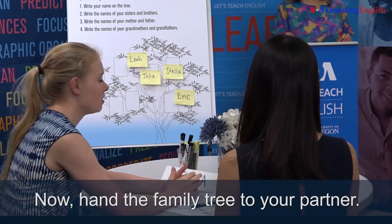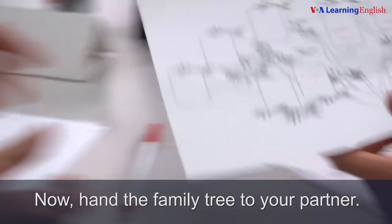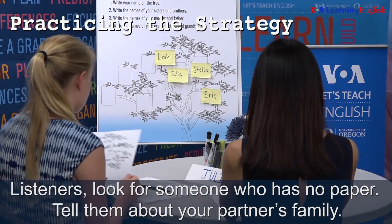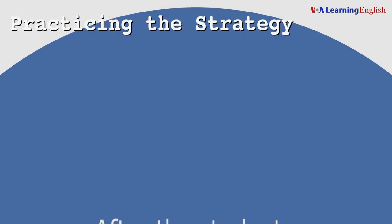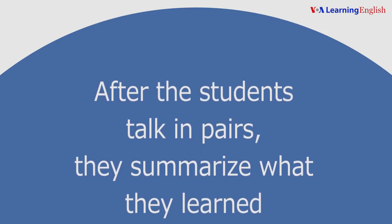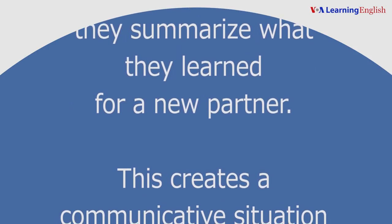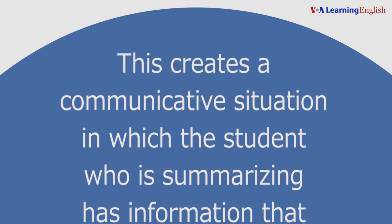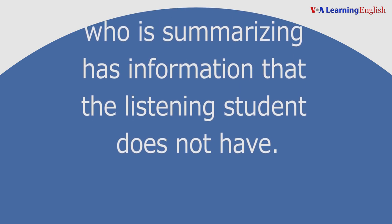Now, hand the family tree to your partner. Listeners, look for someone who has no paper. Tell them about your partner's family. Practicing the strategy: After the students talk in pairs, they summarize what they learned for a new partner. This creates a communicative situation in which the student who is summarizing has information that the listening student does not have.